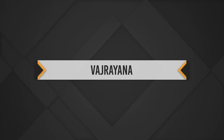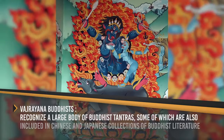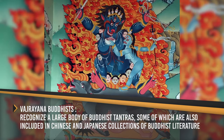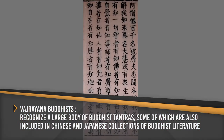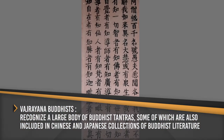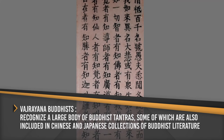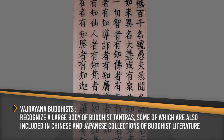Vajrayana Buddhism — The Vajrayana tradition of Buddhism spread to China, Mongolia and Tibet. Vajrayana Buddhists recognize a large body of Buddhist tantras, some of which are also included in Chinese and Japanese collections of Buddhist literature and versions of a few even in the Pali Canon.